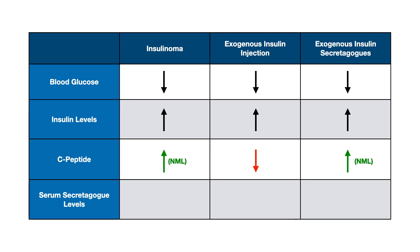If somebody is injecting themselves with insulin from a pharmaceutical vial, there is no C-peptide in that vial, so C-peptide levels will be decreased. If you see a decreased C-peptide — highlighted in red because it's so important — that points you in the direction of exogenous insulin injection.